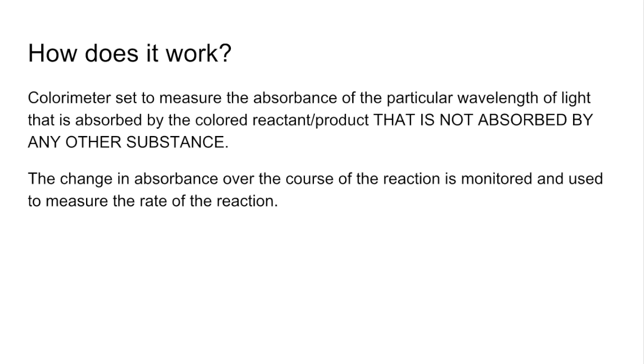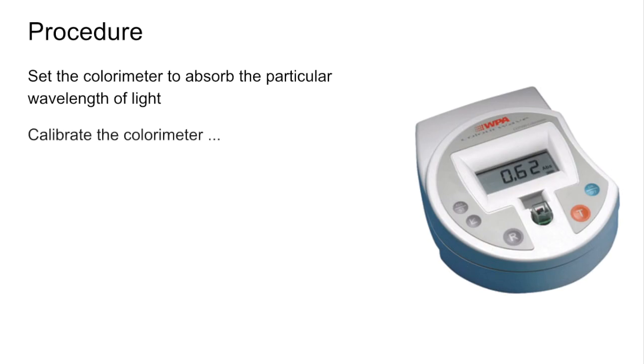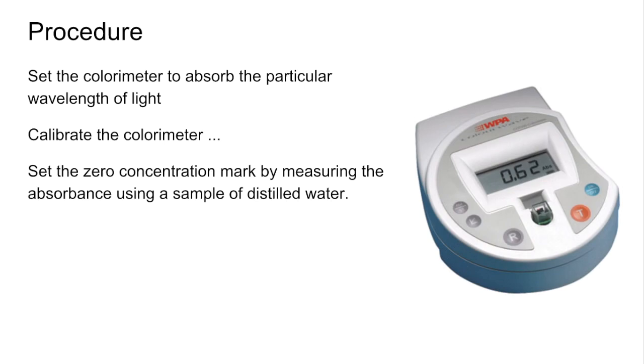We'll run through the procedure now. On the right there's a picture of a colorimeter, and the first thing you would do is set the colorimeter to absorb that particular wavelength of light. Remember, it's a wavelength of light that only the colored substance absorbs.